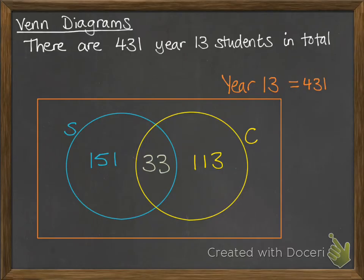From that we can work out how many students don't take either stats or calculus. And we put them outside of those two circles. So if we do 431, take away the 297 students that take stats or calculus, we'll get 134.